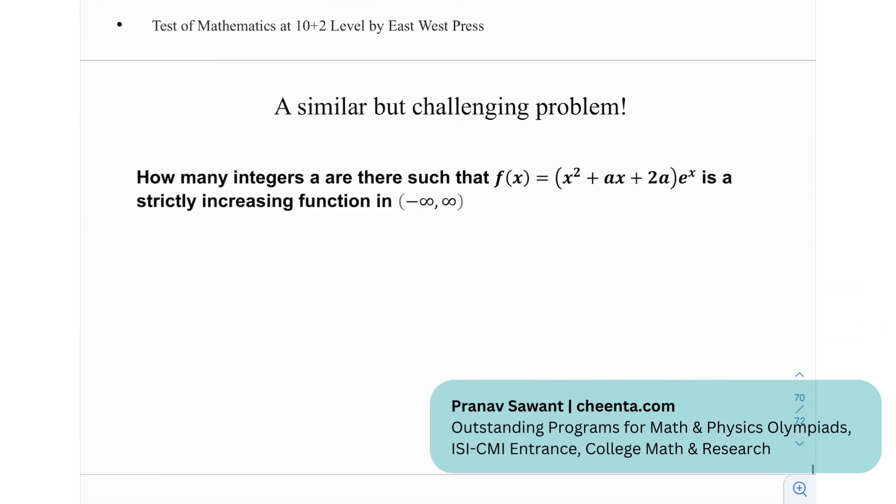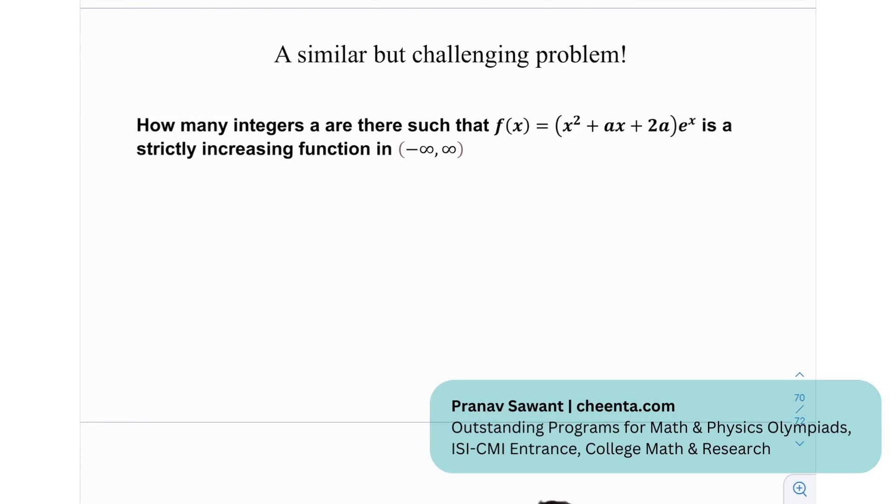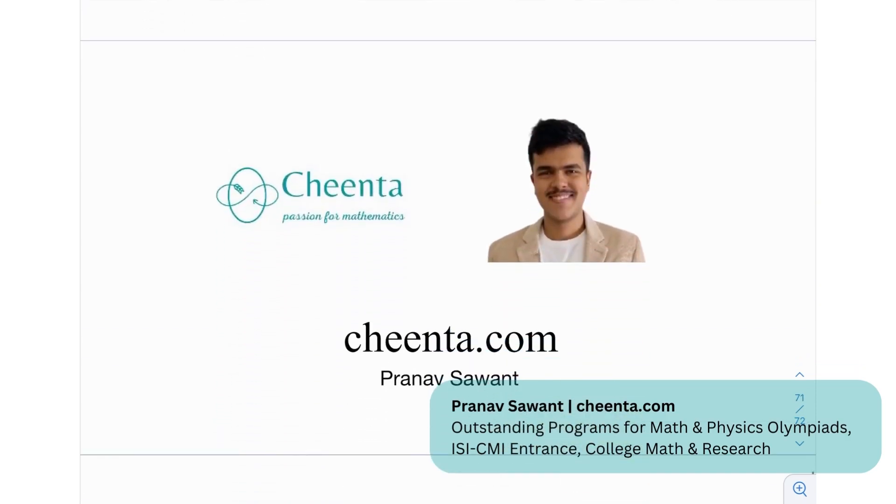Now we have a similar but challenging problem. How many integers a are there such that the given function f(x) = (x^2 + ax + 2a)e^x is a strictly increasing function in (-∞,∞)? Strictly increasing means it does not have any local minimum or local maxima - it is a monotonically increasing function. I wanted to find out how many values of a are there such that it satisfies this property of monotonicity. If you're able to make any progress on it, do let me know in the comment section. Until then, I'll see you in the next video. Thank you very much and bye-bye.